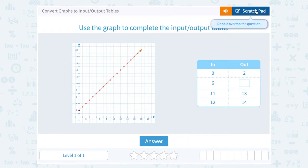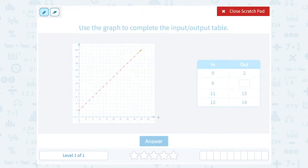So when you have an input and an output column, the in number is always along, we call this the x-axis, the one that goes left to right.